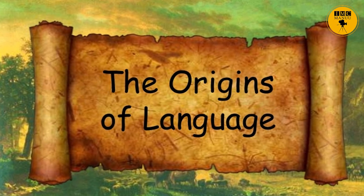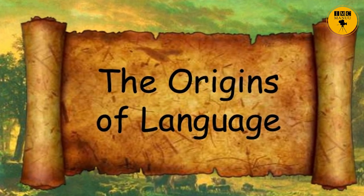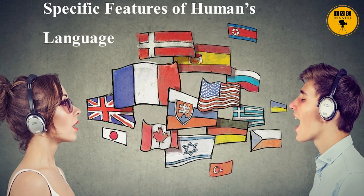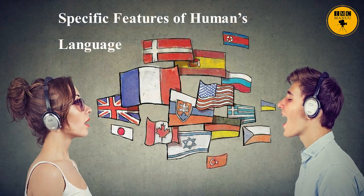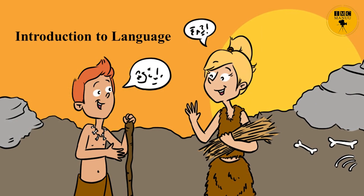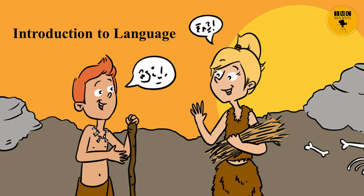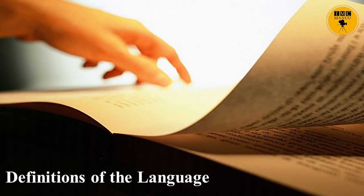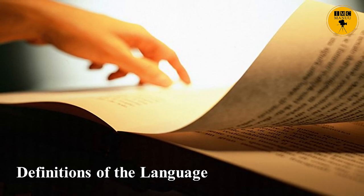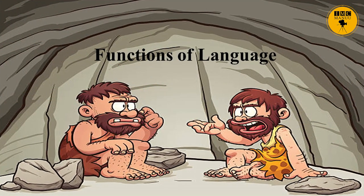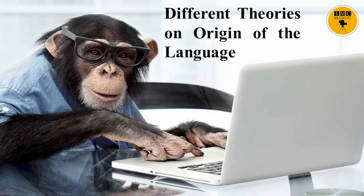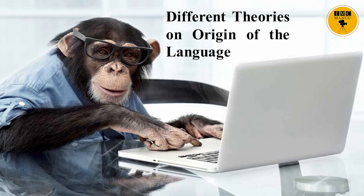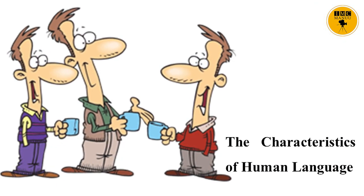Let me recall what we have discussed so far. The first important point was the origin of language. The second was the specific features of human language. Third was an introduction to language, where we talked about many definitions of what language is. We also highlighted the functions of language, and finally concluded by discussing the different theories of the origin of language and the characteristics of human language.